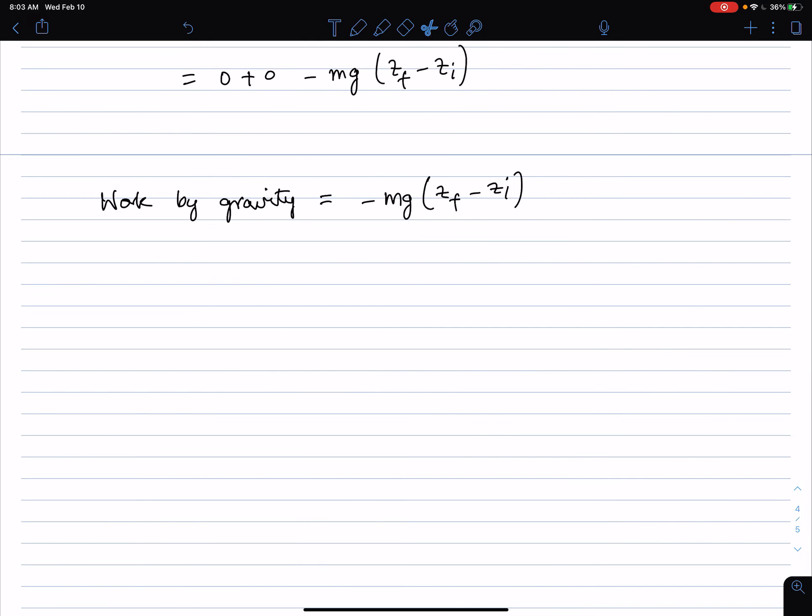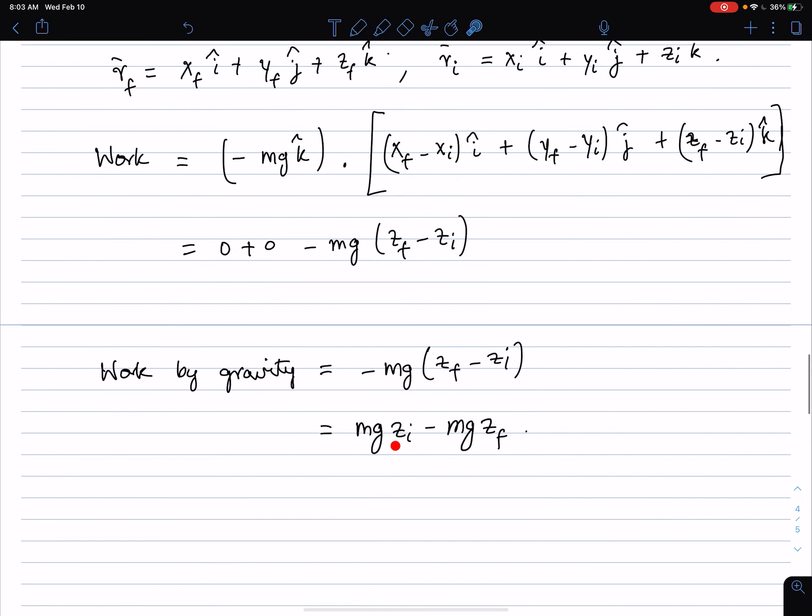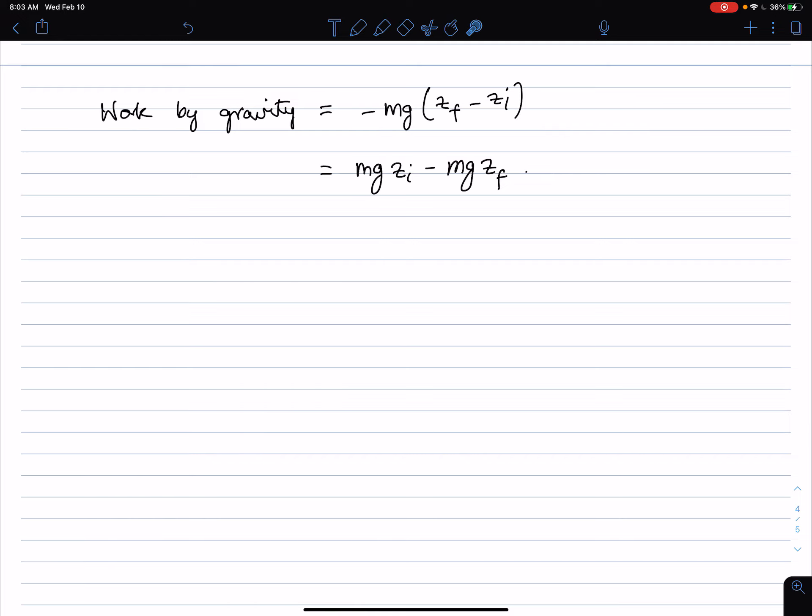So what does this look like? Let me rearrange it. mg z initial minus mg z final is what that comes out to. So if a particle is going from some point to some other point, the work done by gravity is mg initial point z value minus mg z value of the final point. So we just derived an expression for the work done by gravity. And to use essentially a simpler term, because we compute work done by gravity so often, people essentially made up a new term called potential energy.